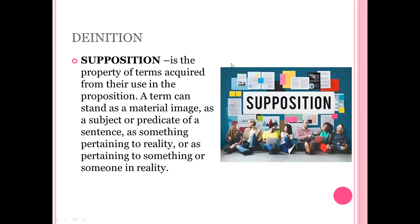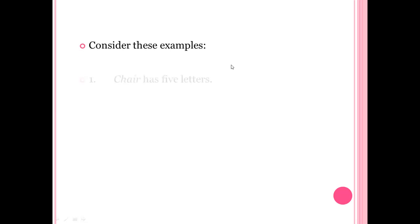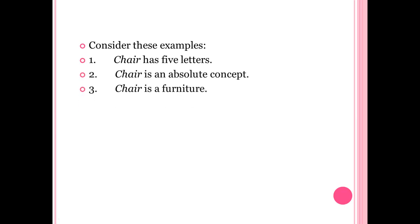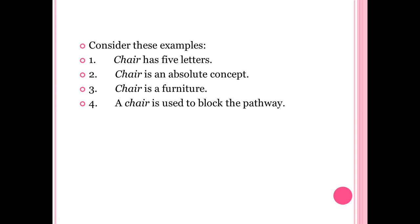A term can stand as a material image as a subject or predicate of a sentence, or as something pertaining to reality. Consider these examples using the subject 'chair': Chair has five letters; chair is an absolute concept; chair is a furniture; and chair is used to block the pathway. In example one, chair stands as a material image for the word itself, because chair has five letters.